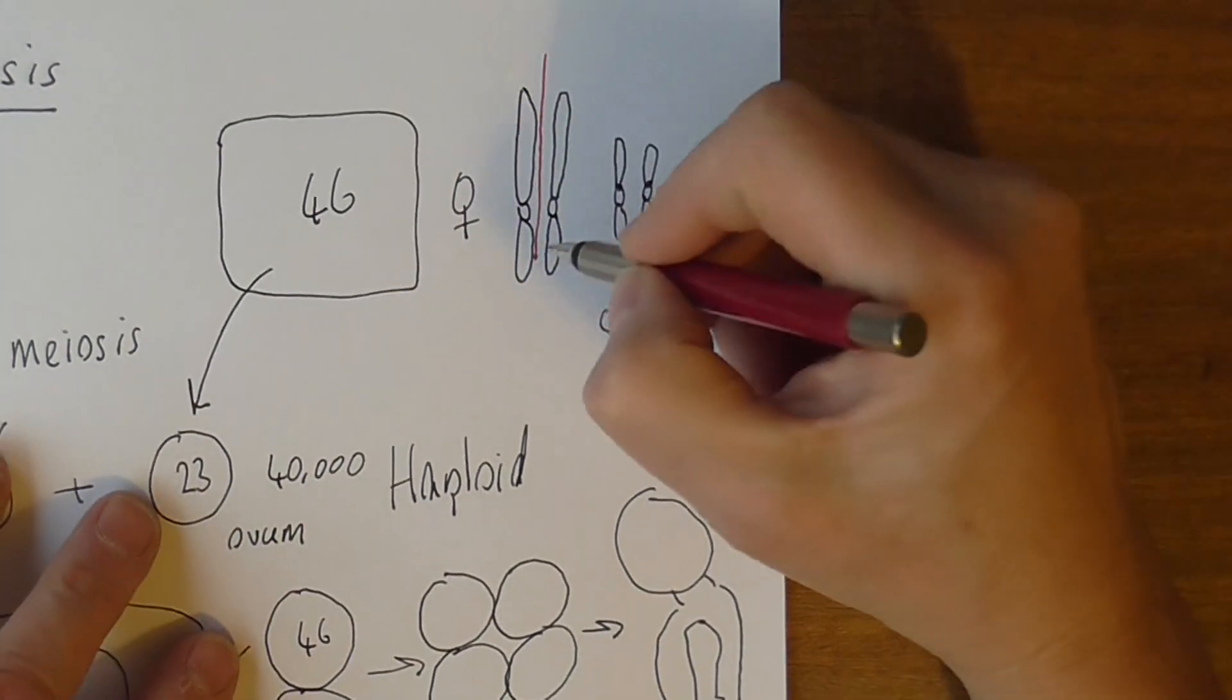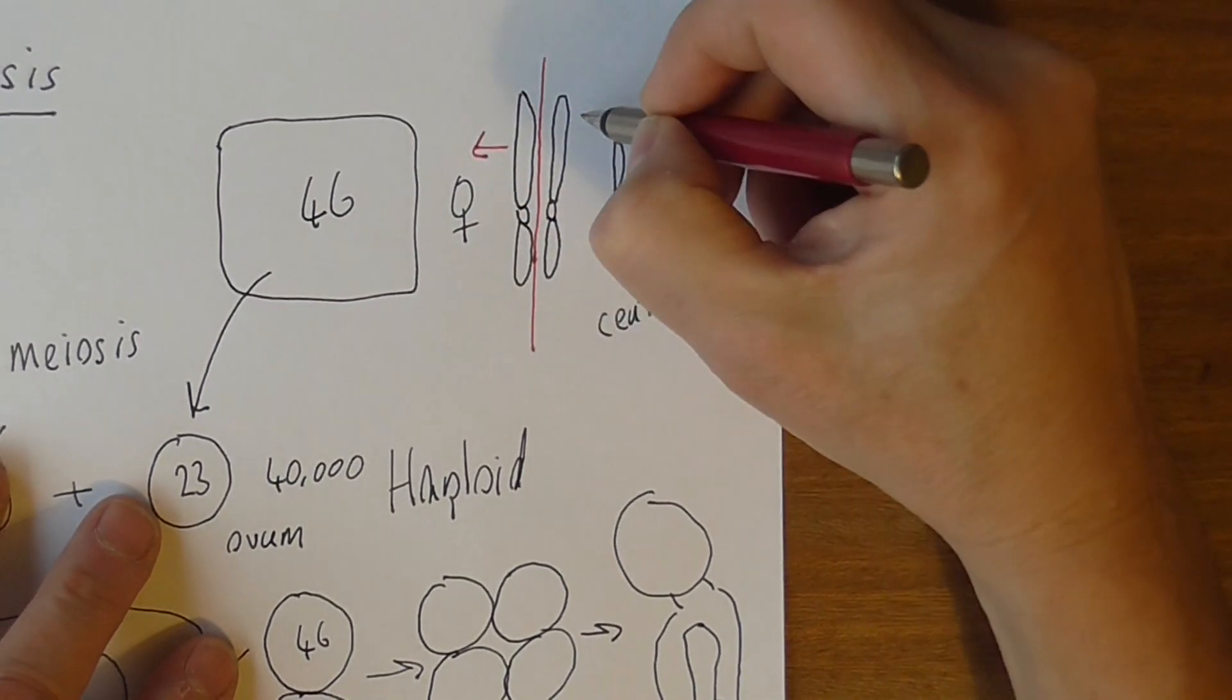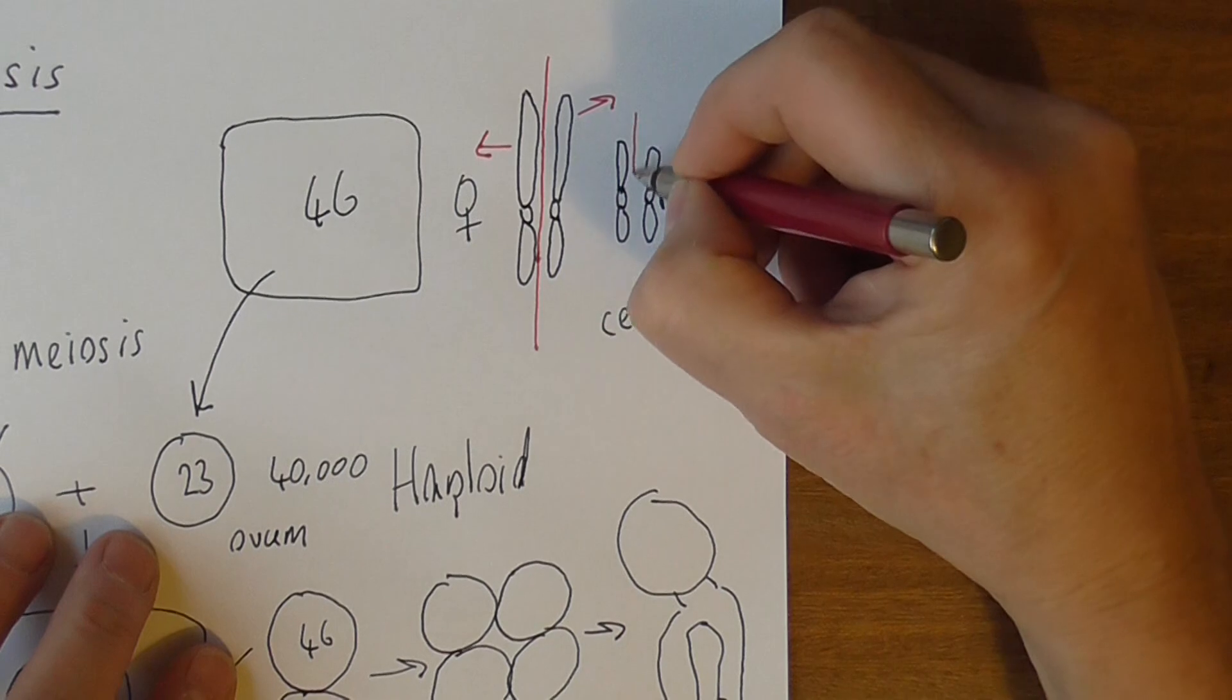What happens is in the process of meiosis, these homologous chromosomes, these pairs of chromosomes are separated, and one will go into one ovum and one will go into the other.